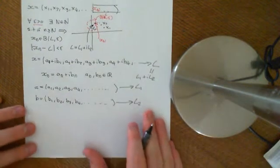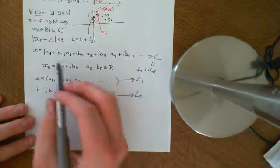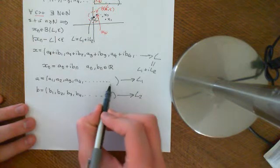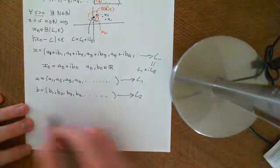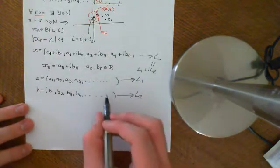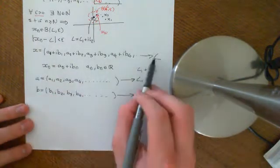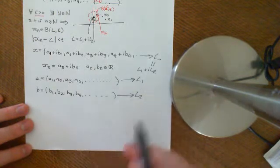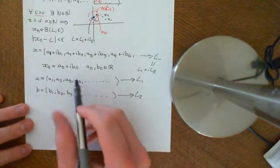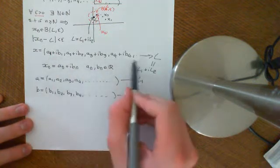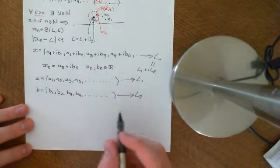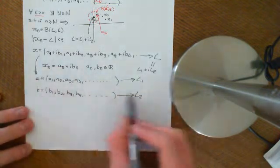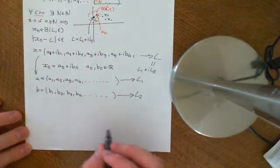I'm going to prove now that if the original sequence of complex numbers converges to L, then the sequence of real parts will converge to L1. We need to prove two things: firstly, that if this converges to the limit L it implies these two sequences converge to what I've said they converge to, and secondly the other way around — that if these two sequences converge, then this sequence converges. So we want to prove both directions, and we'll go in this direction first.